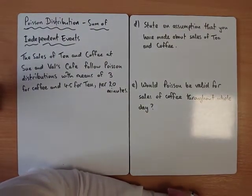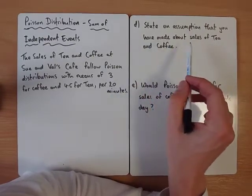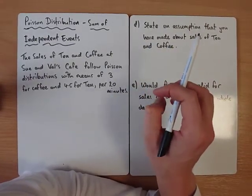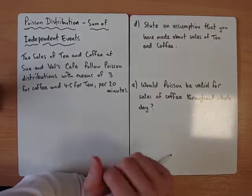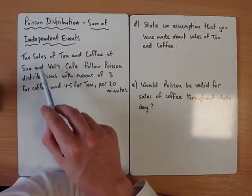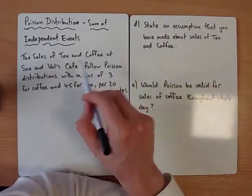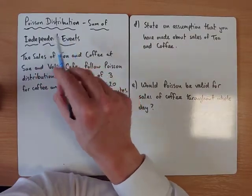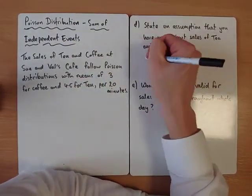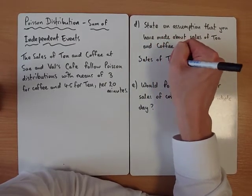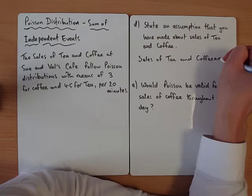The last two questions is more about the actual nature of the Poisson distribution, not the calculations. To state an assumption that you've made about the sales of tea and coffee. Now, if you get asked for an assumption in statistics, go back and read the question and think about what we've been told. Anything that we have been told, we don't need to assume, but maybe something that we've not been told. So it tells us in the question that the sales of tea and coffee follow a Poisson distribution. But because we're thinking about two different ones and we were thinking about the total, the clue's in the title, that the two events, if you're going to combine them together, they've got to be independent for us to be able to do this. And we weren't told in the question that they were independent. So sales of tea and coffee are independent.